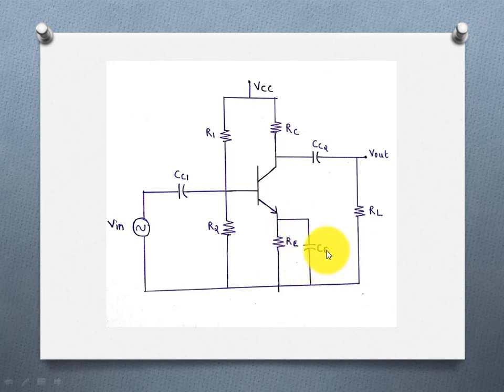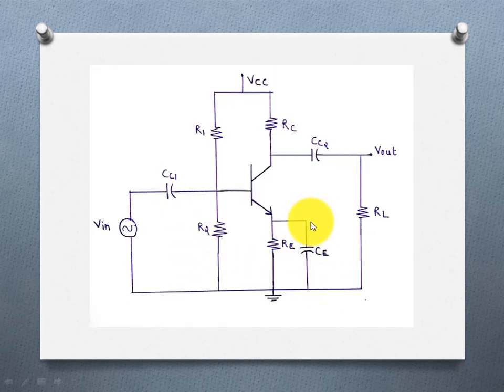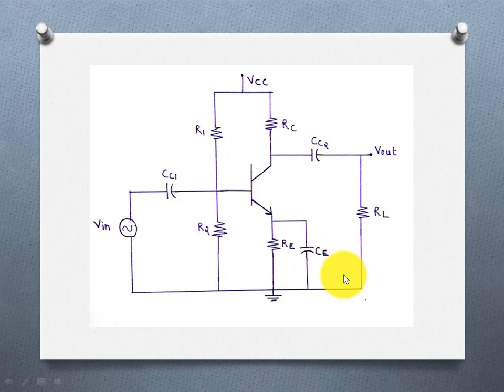This completes the diagram. Finally, add the ground symbol. This is the complete RC Coupled Amplifier circuit diagram drawn in the correct order.